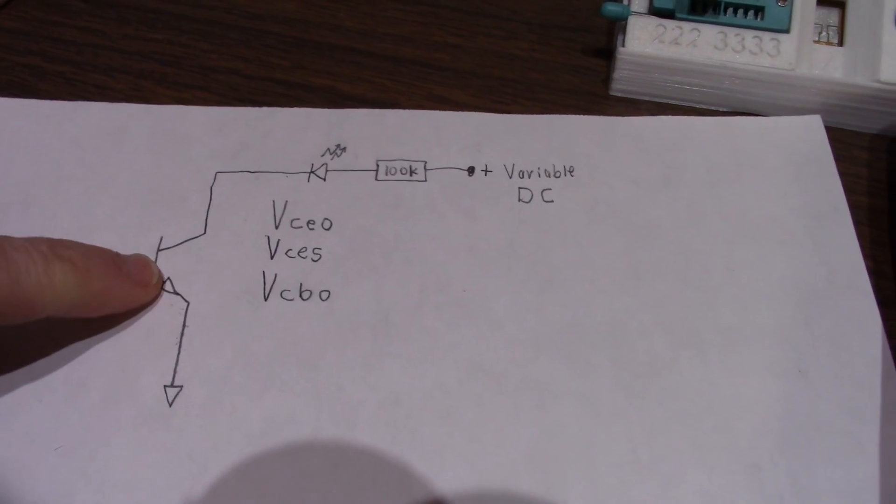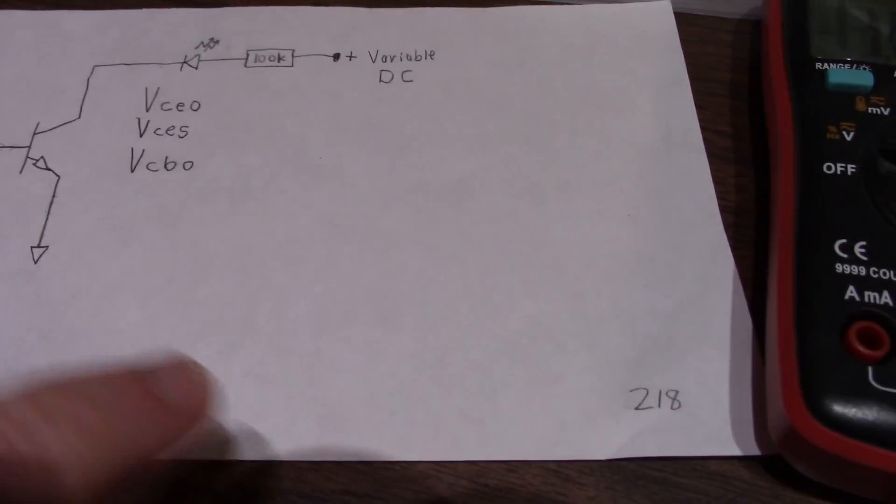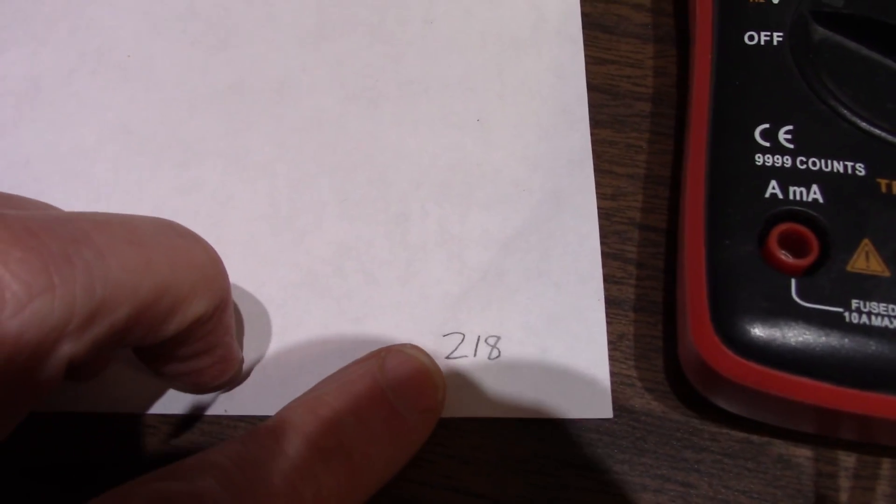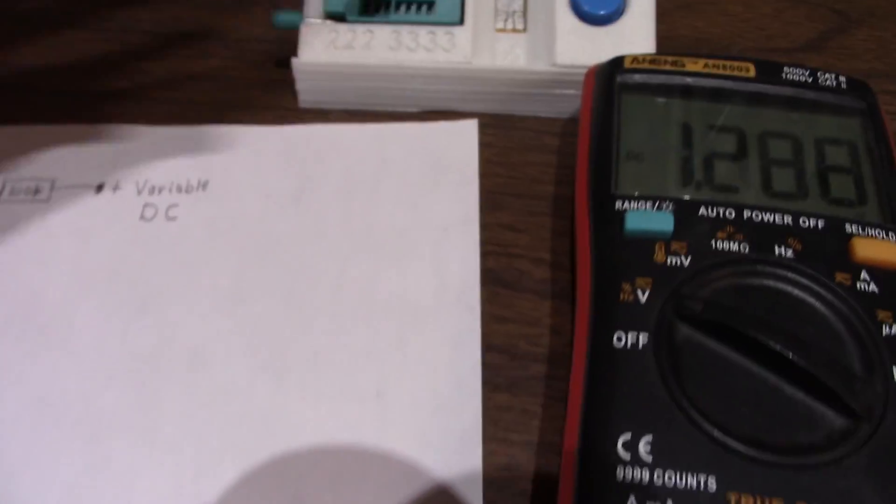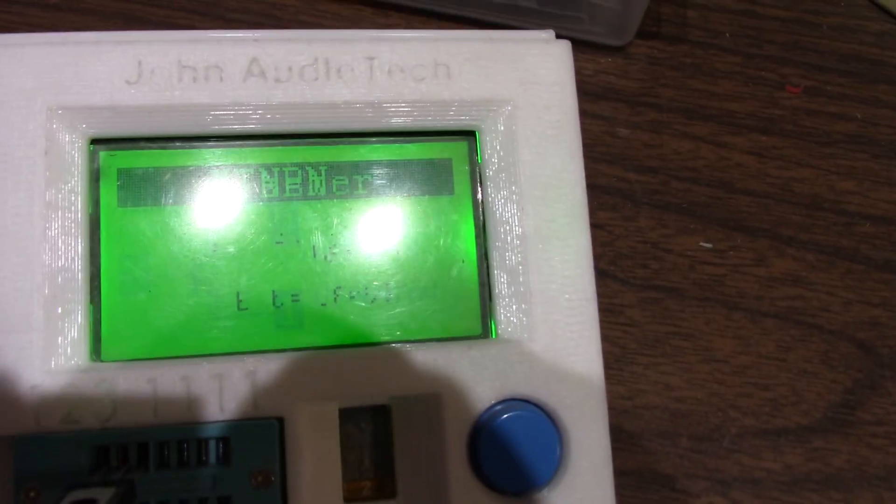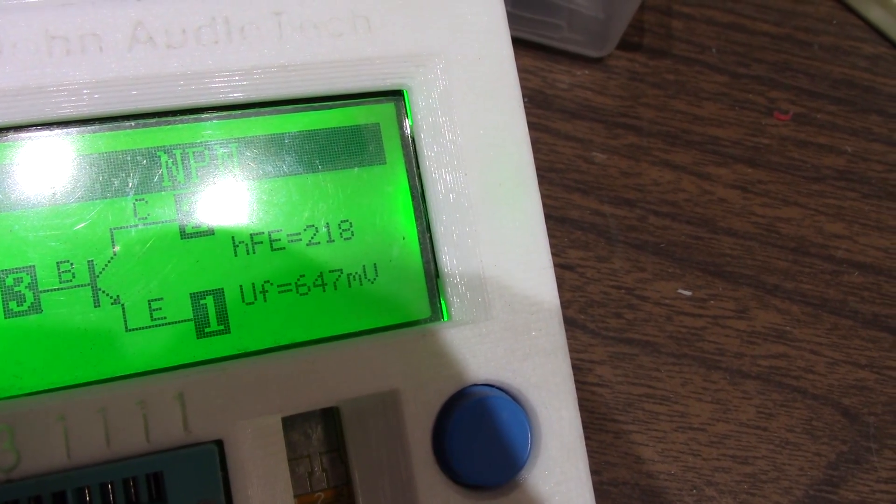Another thing I'm curious about is if I damaged the transistor doing these tests. Well, when I started, it had a gain of 218, and the gain would always change if it gets damaged. And, well, it didn't do anything to it.